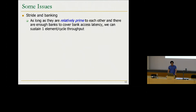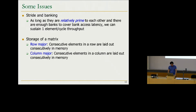The stride is the distance between two consecutively accessed elements. Everything works fine as long as the stride and the number of banks are relative primes—meaning not divisible by each other. We will see an example of how a matrix multiplication maps onto an architecture with multi-banked memory. But first we need to talk about matrix storage.